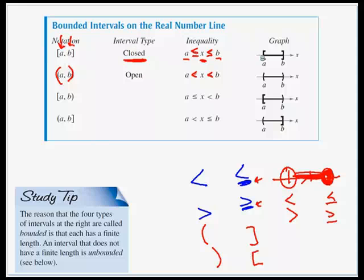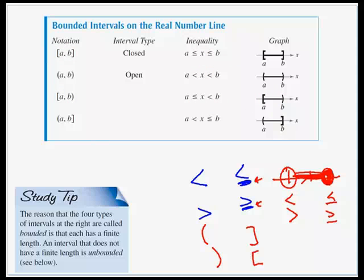In addition to open and closed intervals, we could have a mixture. For example, bracket A comma B with a parenthesis: A is still the left endpoint, B is still the right. The bracket to the left of A tells us this will be less than or equal to; the parenthesis after B means strictly less than. We could also reverse those with a parenthesis on the left and a bracket on the right. The reason these four types of intervals are called bounded is that each has a finite length — they have a starting and a stopping point on the graph.